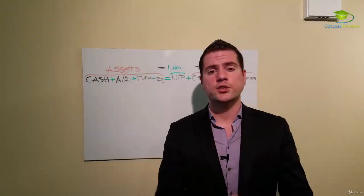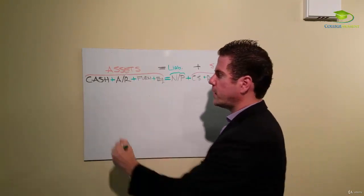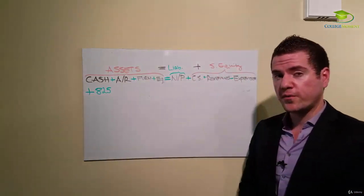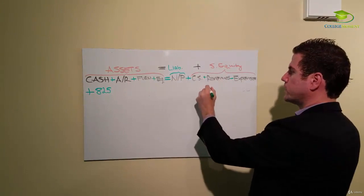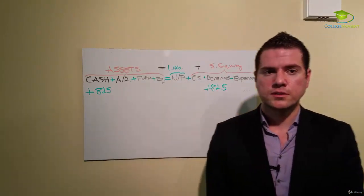Next transaction says that we have actually provided services for 825 dollars. We provided the service, we received the cash. When we provide a service, what is that? It is called revenue. We are earning revenue. Keep in mind again the equation—the equation balances.